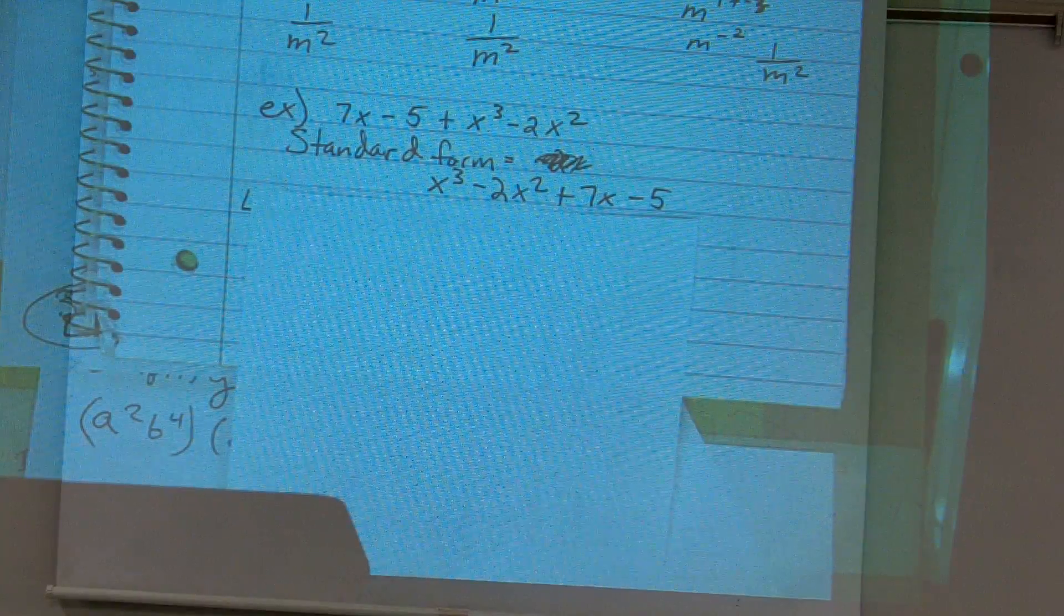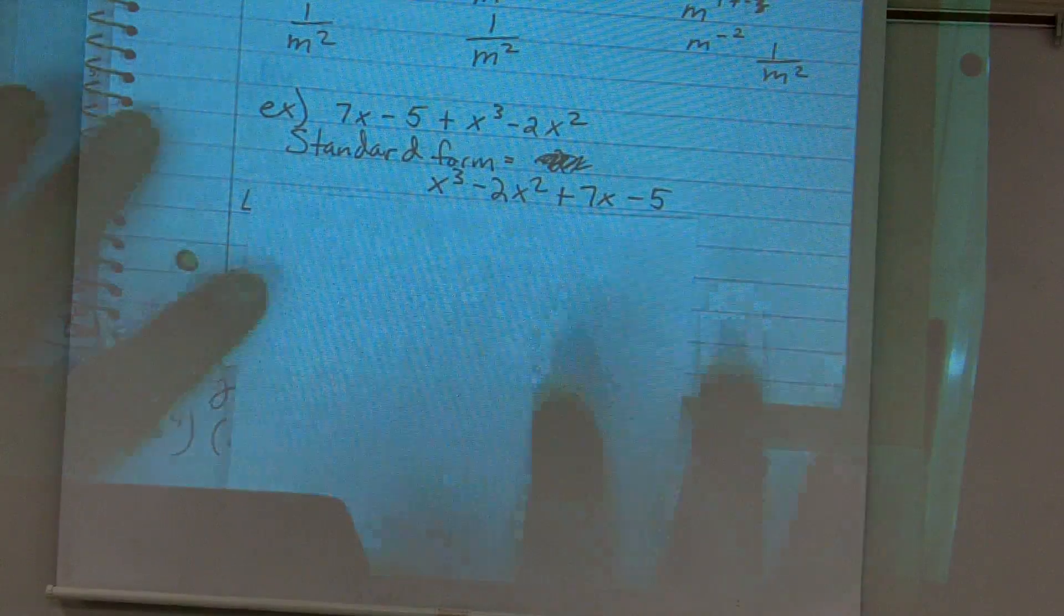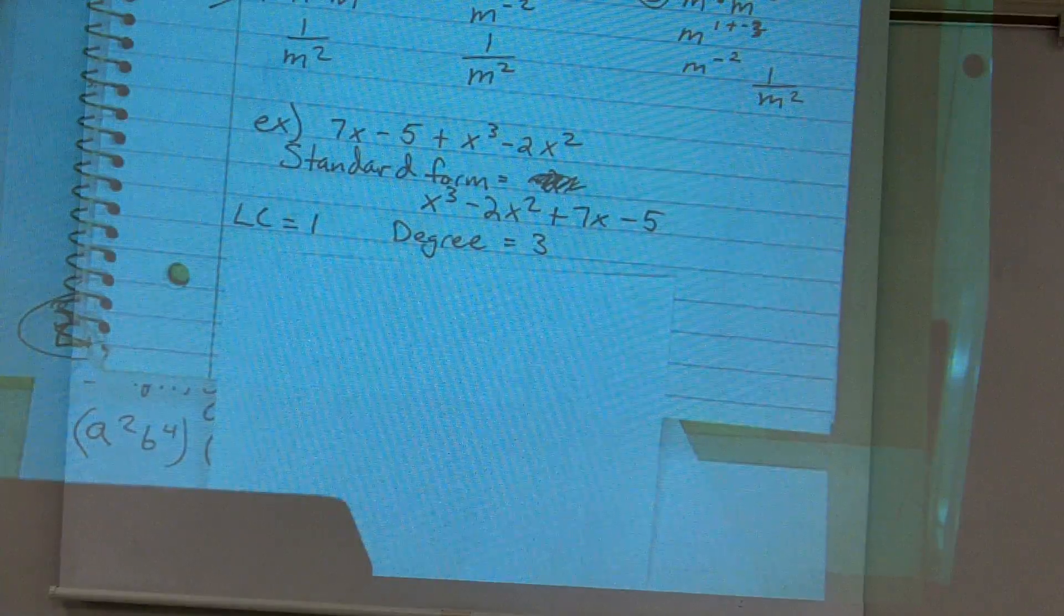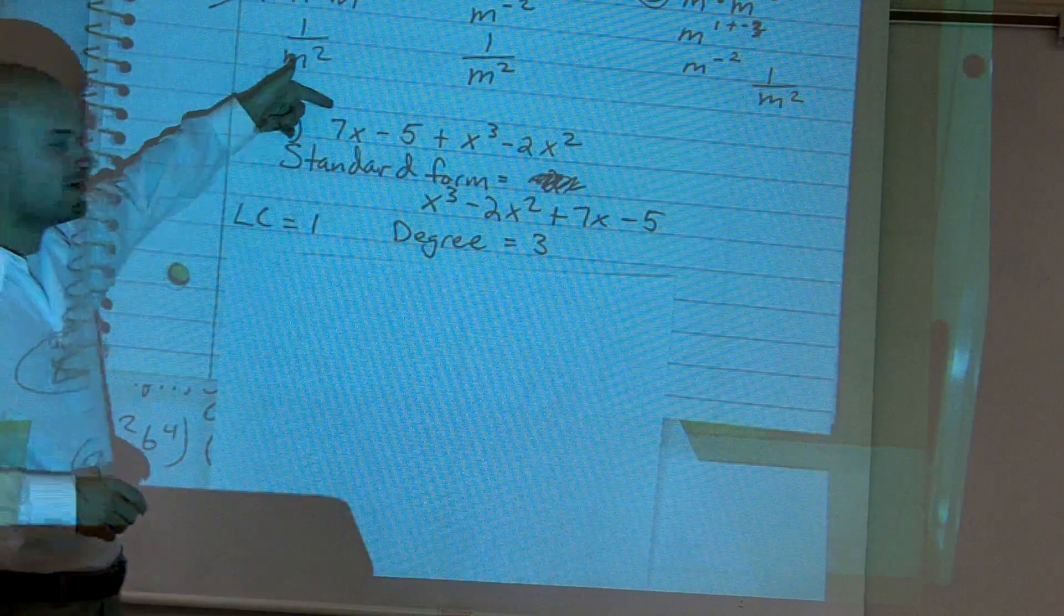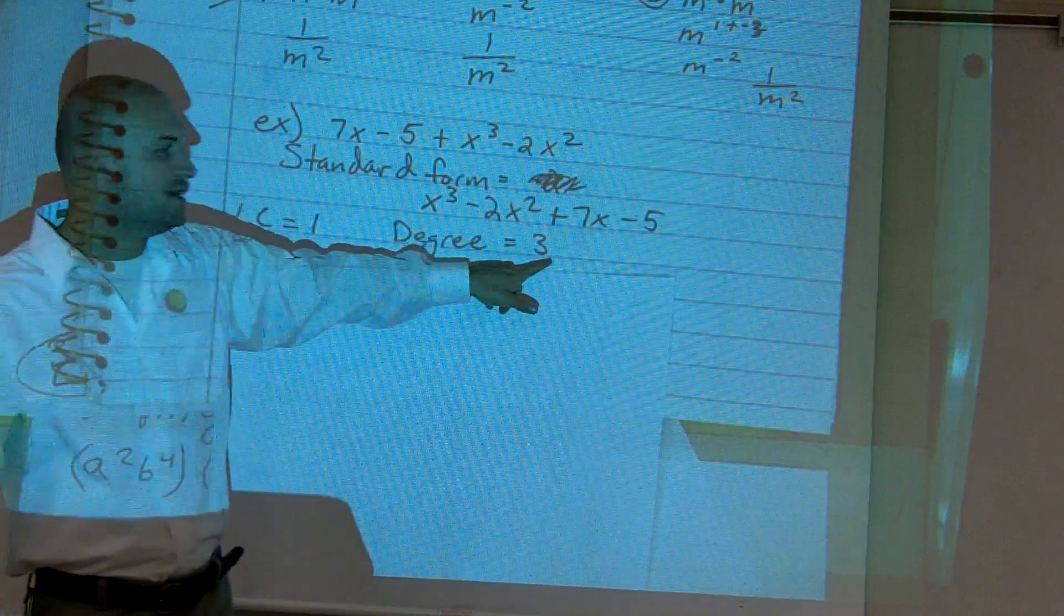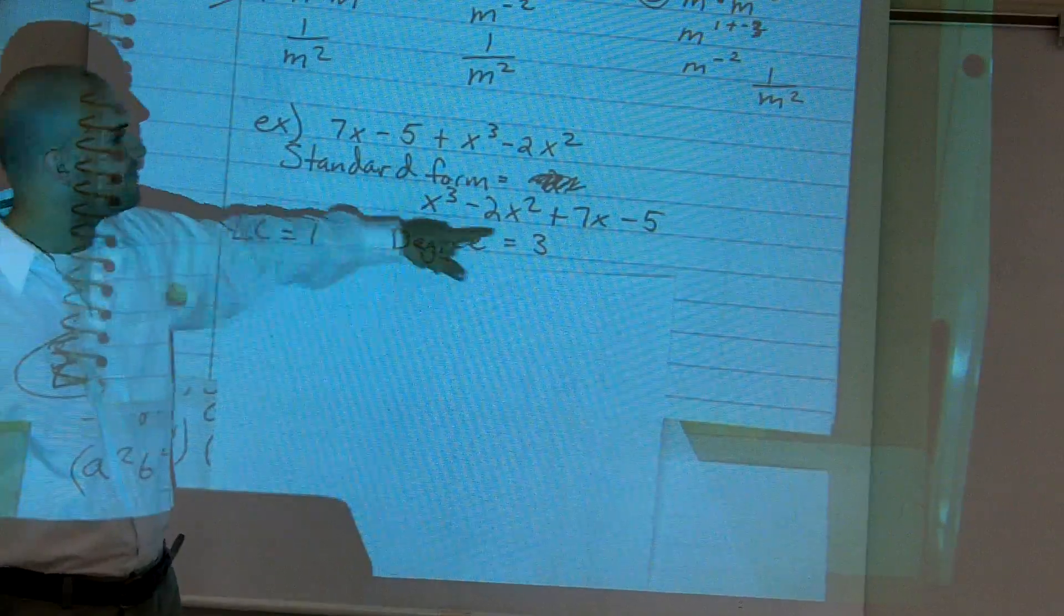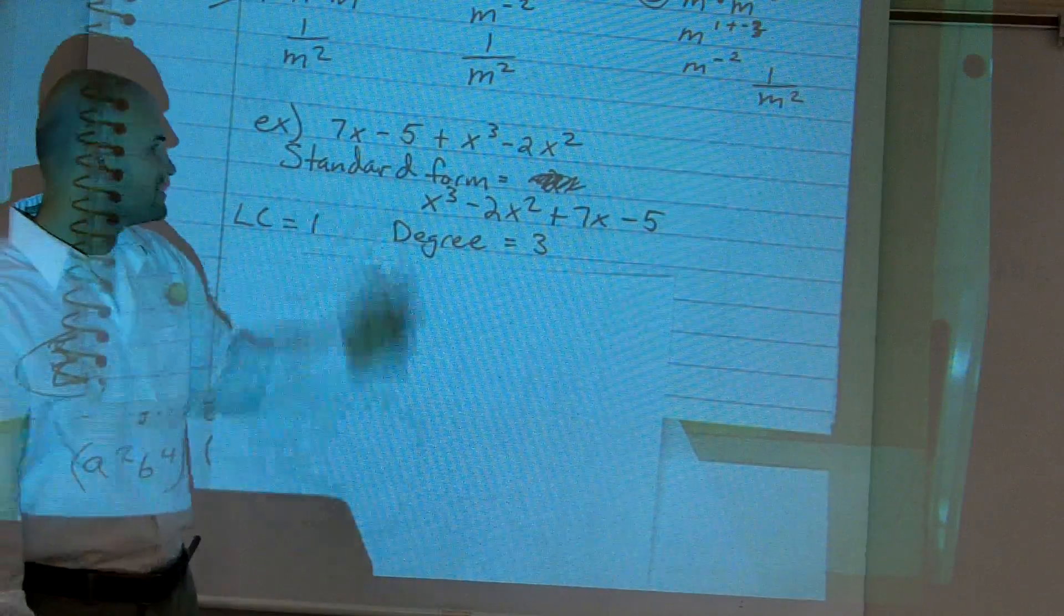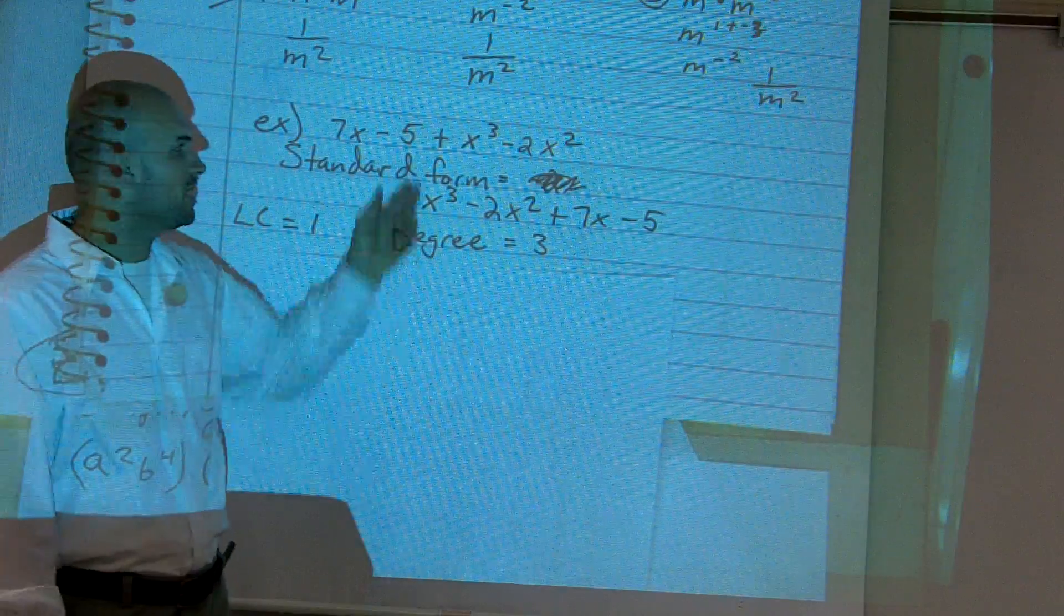Then, once you have it in standard form, we can determine what our leading coefficient and degree are. Our leading coefficient is the number in front of our variable, and our degree is the exponent of our leading term, which is x³. So that's how you find the leading coefficient and the degree of a given polynomial.